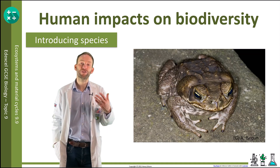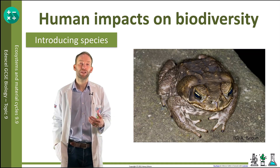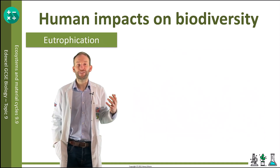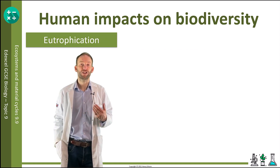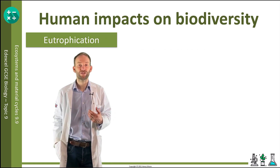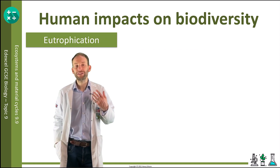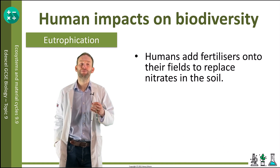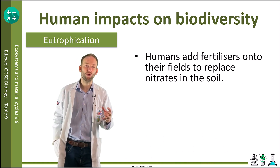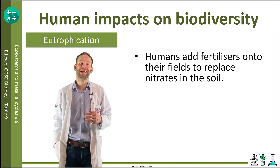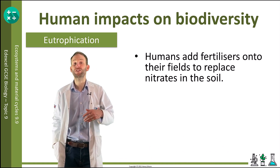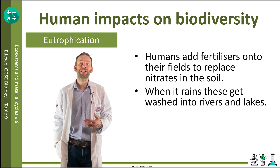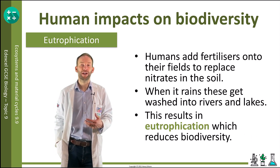The last example is eutrophication. Humans add fertilizers onto their fields to replace nitrates in the soil, but when it rains these nitrates and other minerals can get washed into rivers and lakes, resulting in eutrophication, which reduces biodiversity.